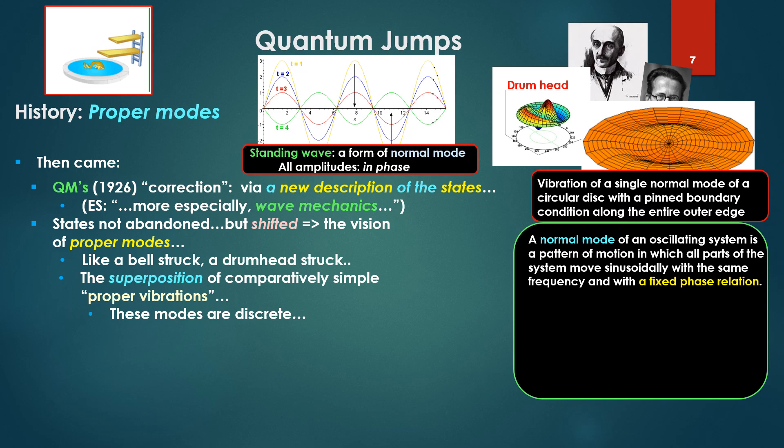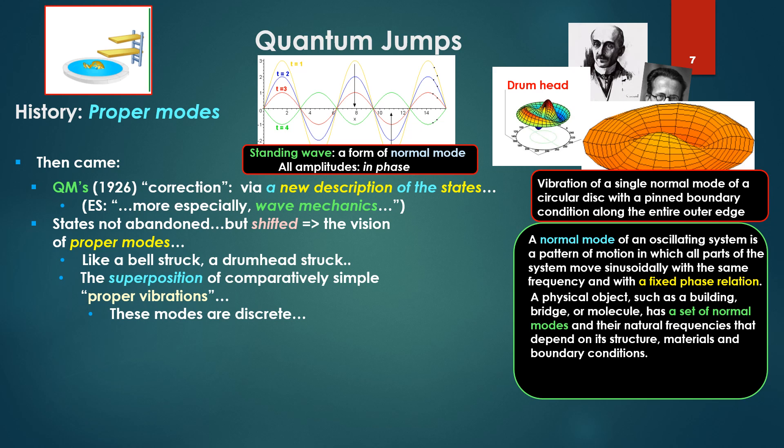So here we have a standing wave. Notice that several standing waves, the green, the red, the blue, the yellow, notice that they're all crossing at the same nodal points, that is, they're in a fixed phase relation for their amplitude. All amplitudes in phase. A physical object, such as a building, bridge, or molecule, has a set of normal modes and their natural frequencies that depend on its structure, materials, and boundary conditions.